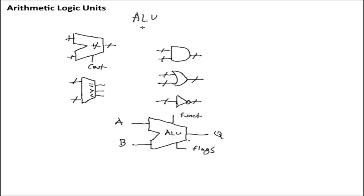Likewise with functions, your general basic one is probably going to include all of this, but you can have a ton of different functions on an ALU. You can have rotate left, rotate right, shift left, shift right, multiply and divide. If you want to have floating point operations, you could do that as well, although we're not quite at the point where we're dealing with floating point.